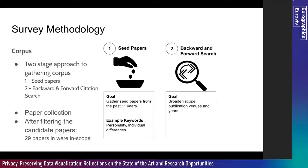We conducted this survey using a methodology of web scraping of seed papers that contain certain keywords from IEEE or ACM digital libraries. We then conducted a backward and forward citation search from the seed papers, gathering a large pool of candidate papers. Eventually we manually selected the papers deemed most relevant to this topic, finding 29 papers that are in scope.